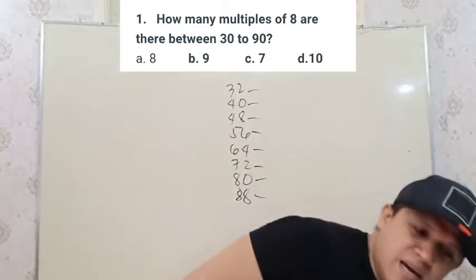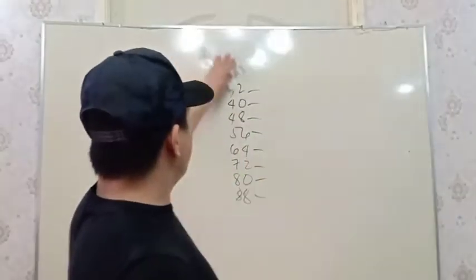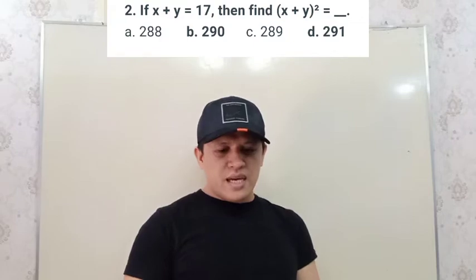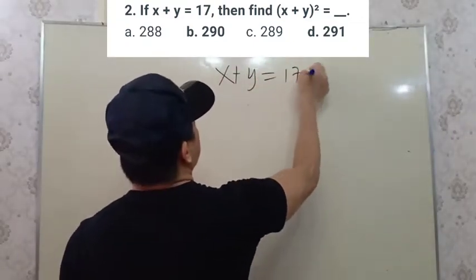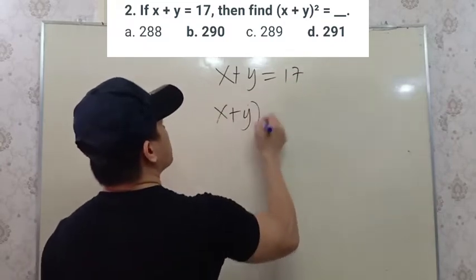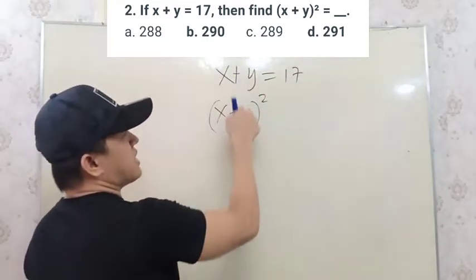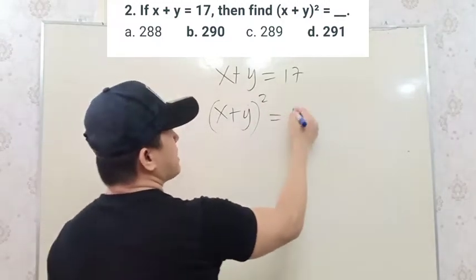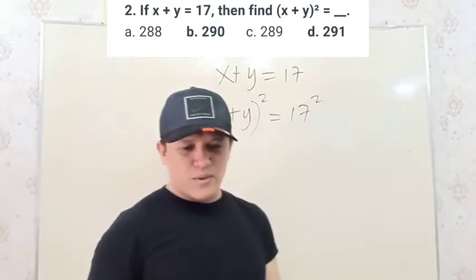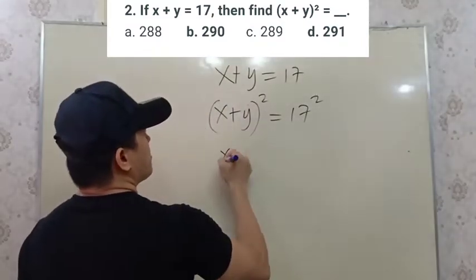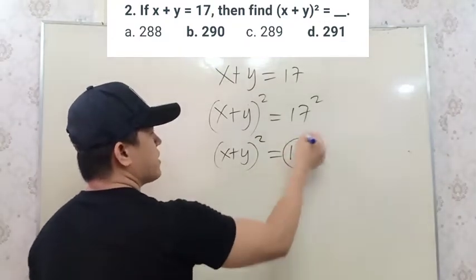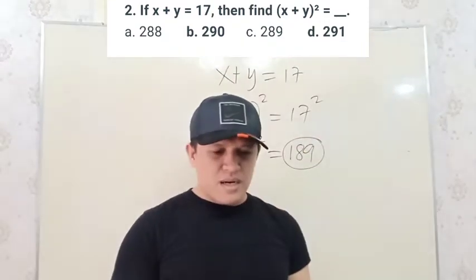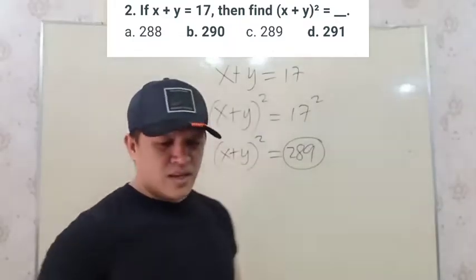Number two: if x plus y is equal to 17, then (x plus y) squared is equal to what? Since the whole expression x plus y is squared, we just compute 17 squared. 17 squared is 289. So the answer is 289.